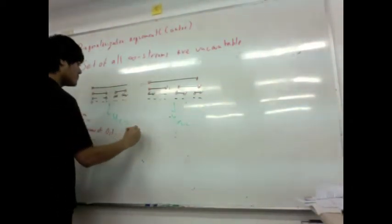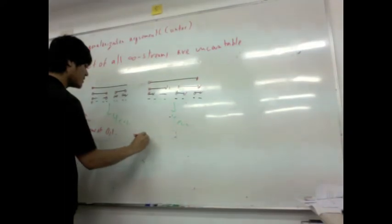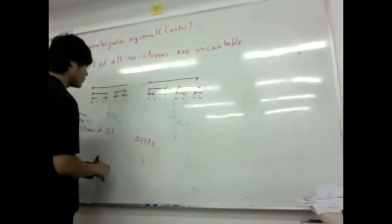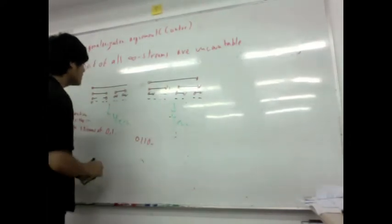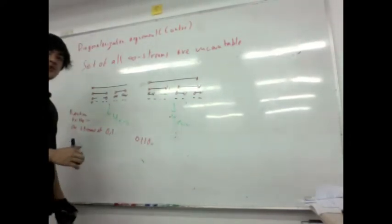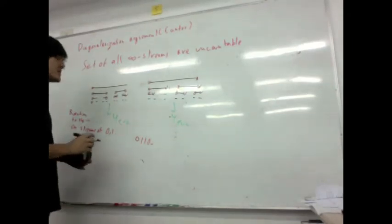Let's look at the number 0, 1, 1, 0, 0, 1, 1, 0, dot dot dot. This corresponds to a point, right? Because you can either choose left or right.